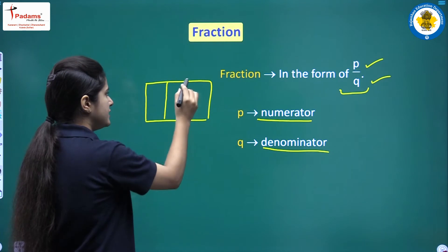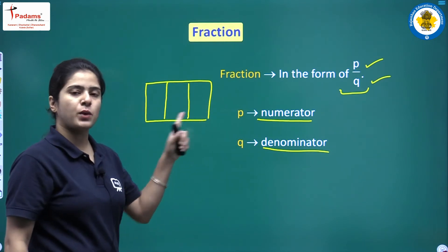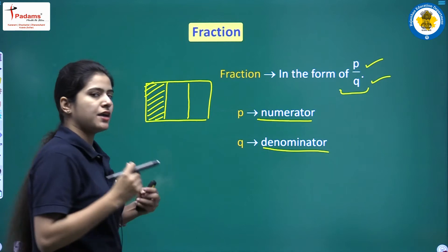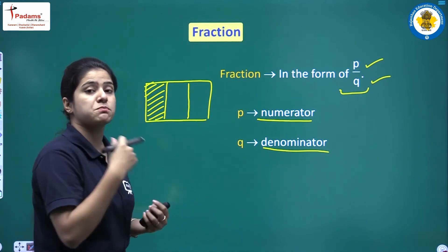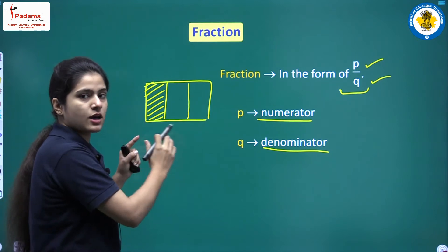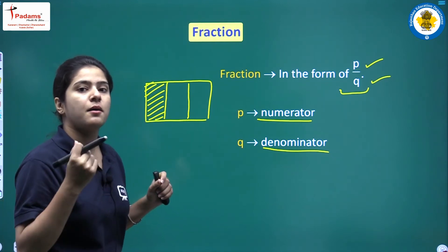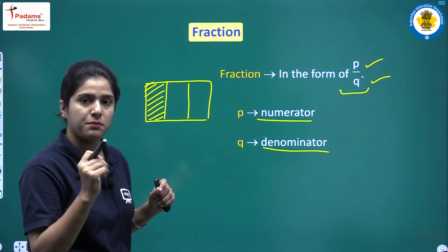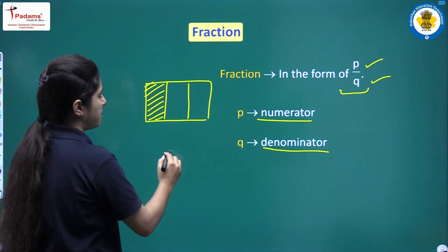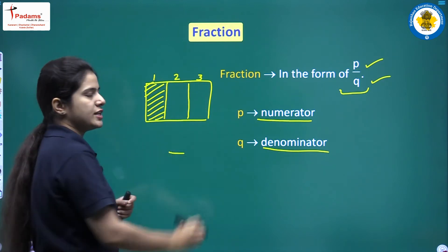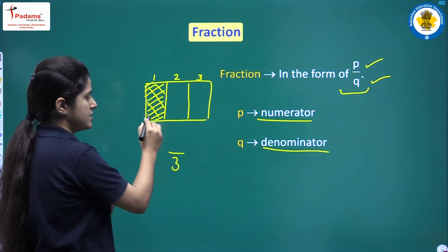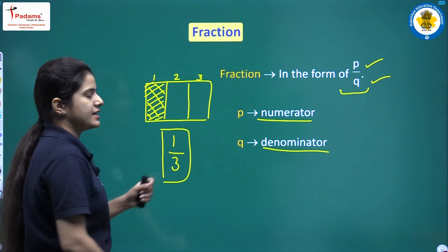Suppose I have a block and I have divided it into three parts, and I have painted only one part. If I'm asked what fraction of this block is painted — this is the whole block and I am asked about part of it — a fraction is like a part of a whole. Total parts are three, and the part that is painted is one. So one upon three is the fraction.